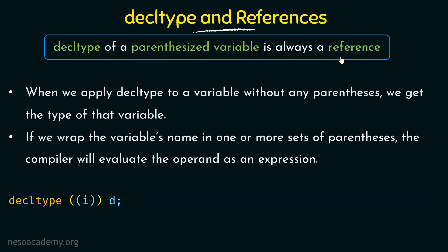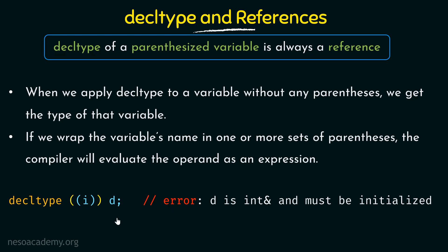A parenthesized variable is always a reference in decltype. So d will be of an integer reference type. And why is it an error here? Because if it is a reference type, it always must be initialized. Since d is an integer reference but is not initialized, it is going to throw an error.